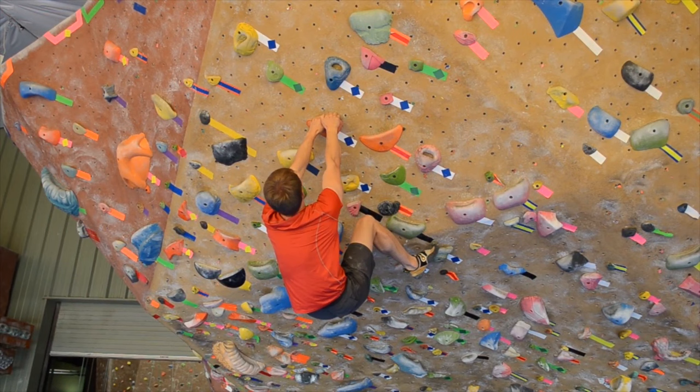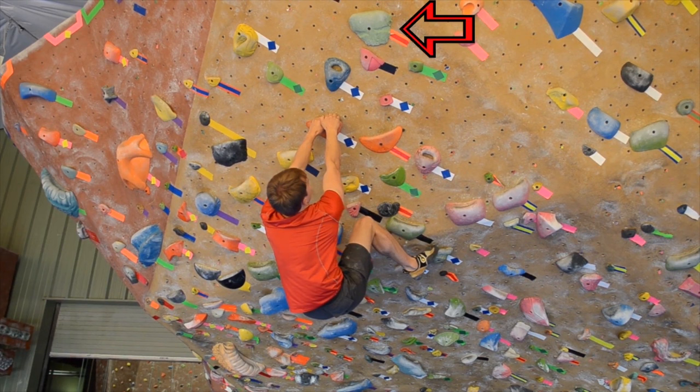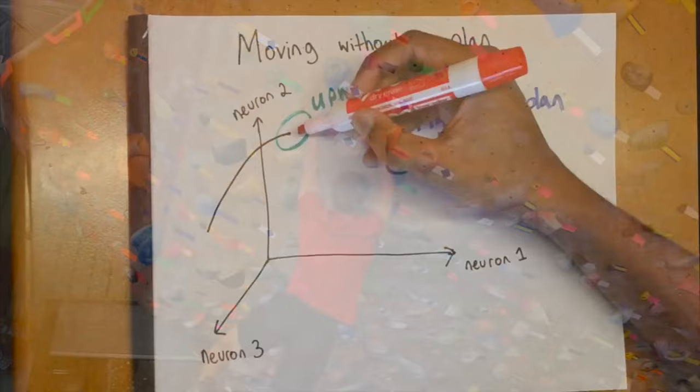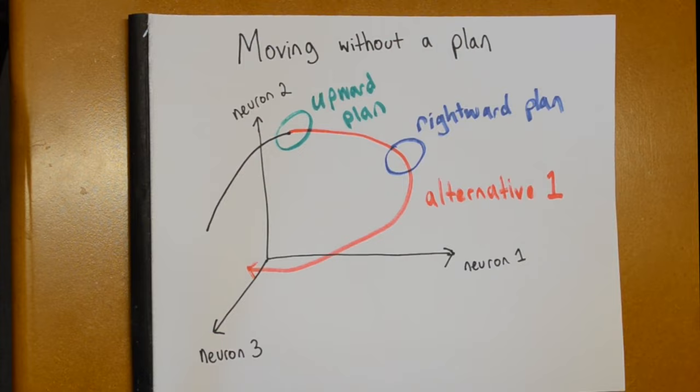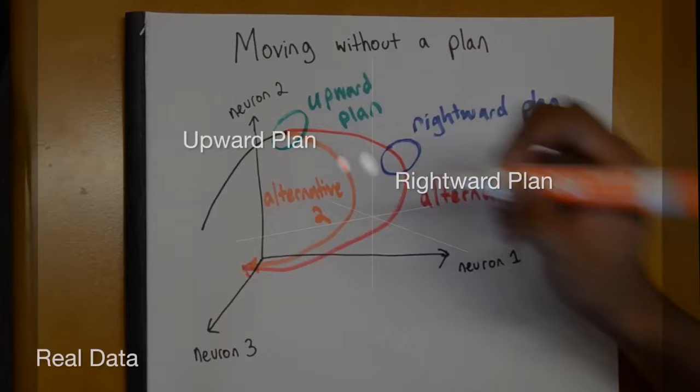But what happens if you don't have time to plan the reach, or need to change the plan suddenly? For instance, if the climber has prepared to reach for the high hold above him, but all of a sudden has to make an unplanned reach for the closer hold to his right when his foot slips. Does the neural state have to pass through the rightward planned state before executing the rightward reach? Or, does the neural activity go directly into the rightward reach trajectory?